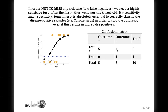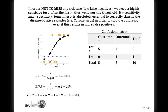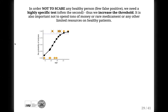Lowering the threshold will result in zero missed cases — good for stopping the outbreak — but will also result in a lot of false positives, which will scare a lot of people. As you can see, the confusion matrix changes, and so will the calculation of sensitivity, specificity, and false positive rates. This gives us another point on the plot. But if your goal is not to scare any healthy person or to save resources — for example, not wanting healthy people to take rare medications — you have to increase the probability threshold and make a highly specific test, often done second after the outbreak has stopped.